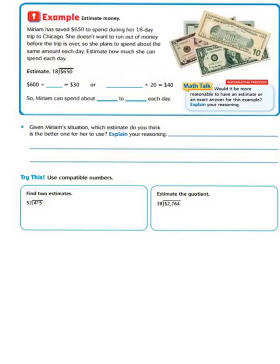Well, our estimate will involve $650 as our dividend, and $18 as our divisor. So, $600 divided by, and we know that we don't have anything to go into 18, so now we have to look at our divisor and round it too. So, $600 divided by 20, because that gives us a basic fact of 6 and 2. 6 divided by 2 equals 30,